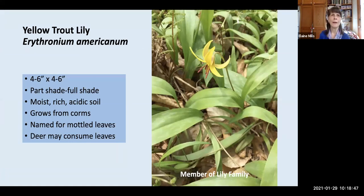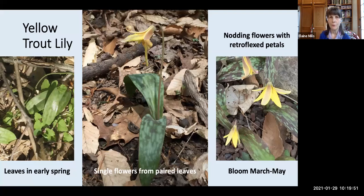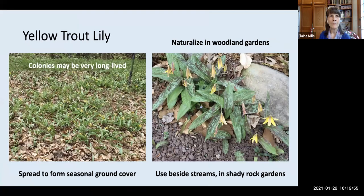Our next plant is yellow trout lily, Erythronium americanum — a very delicate short plant, only 4 to 6 inches high. Like spring beauty, it grows from corms, and it gets its name from the mottled leaves, which may unfortunately be tasty to deer. These photos give you a great reminder of why it's called trout lily — because of those mottled leaves. The leaves appear first, followed by nodding flowers very attractive to low-flying bees, with retroflexed petals blooming in March to May. Yellow trout lily can form a fairly extensive seasonal ground cover, and the colonies can be quite long-lived. They're great to naturalize in woodland gardens and, because they're moisture-loving, you can use them beside streams as well as in rock gardens.